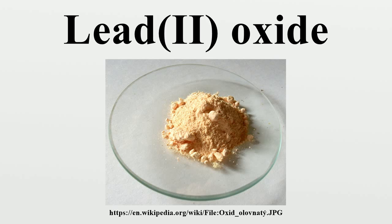The tetragonal and orthorhombic forms of PbO occur naturally as rare minerals. The red and yellow forms of this material are related by a small change in enthalpy.